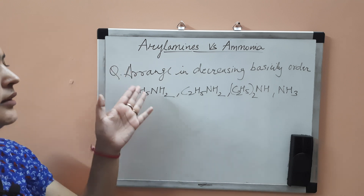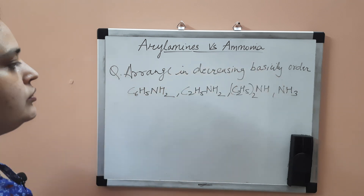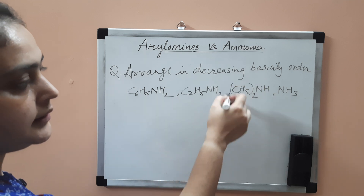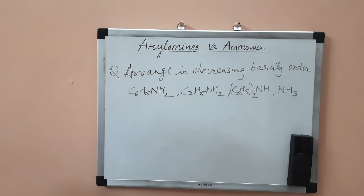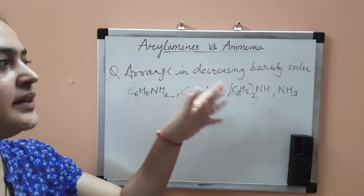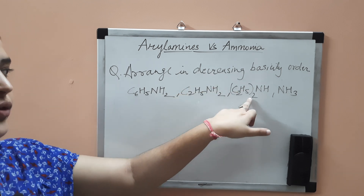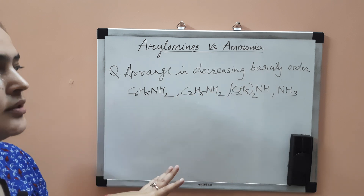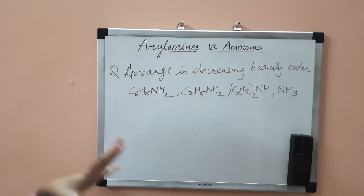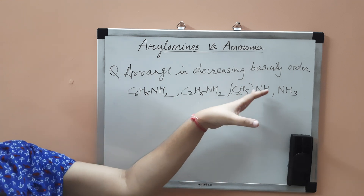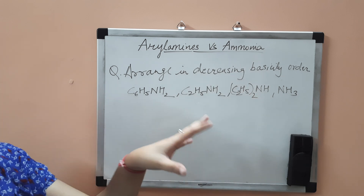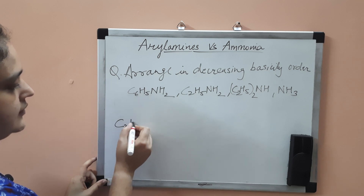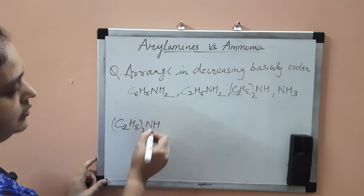The question is: arrange these molecules in decreasing order of basicity. The four molecules are aniline (C6H5NH2), ethanamine (C2H5NH2), diethylamine ((C2H5)2NH), and ammonia. First, the maximum basicity is of diethylamine, (C2H5)2NH, because it has two ethyl groups attached to the nitrogen atom. They release electrons toward nitrogen via inductive effect, giving higher electron density, so nitrogen easily accepts a proton and basicity is highest.